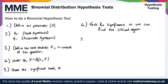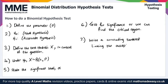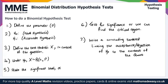Finally, step seven: to conclude our binomial hypothesis test, write a concluding sentence that links the acceptance or rejection of H0 to the context of the question. Once we've completed step seven, we have fully performed a binomial hypothesis test.